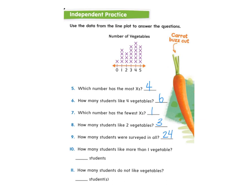How many students like more than one vegetable? More than one means everything after one on the number line — so two, three, four, and five are all bigger than one. Instead of counting all of those X's, let's use math: subtract the students at zero and one from the total. That's five students not included, so 24 minus five. Let's use a strategy: 24 minus four equals 20, then 20 minus one equals 19. So 19 students like more than one vegetable.